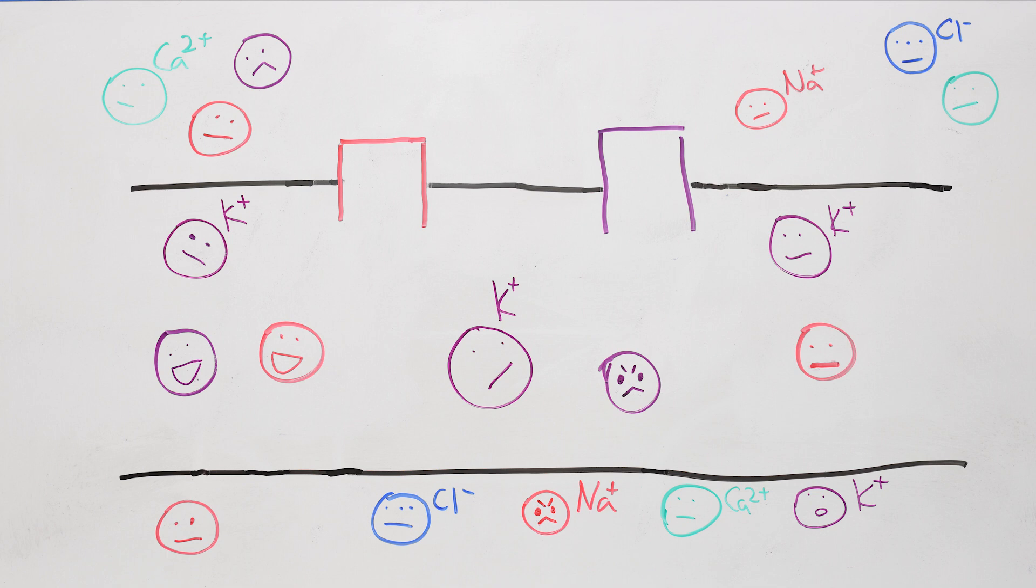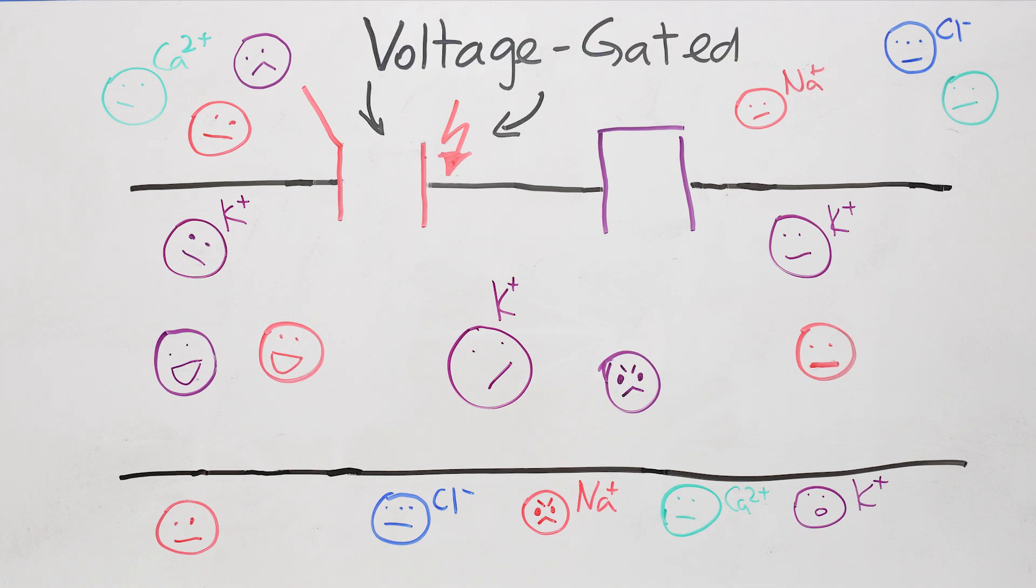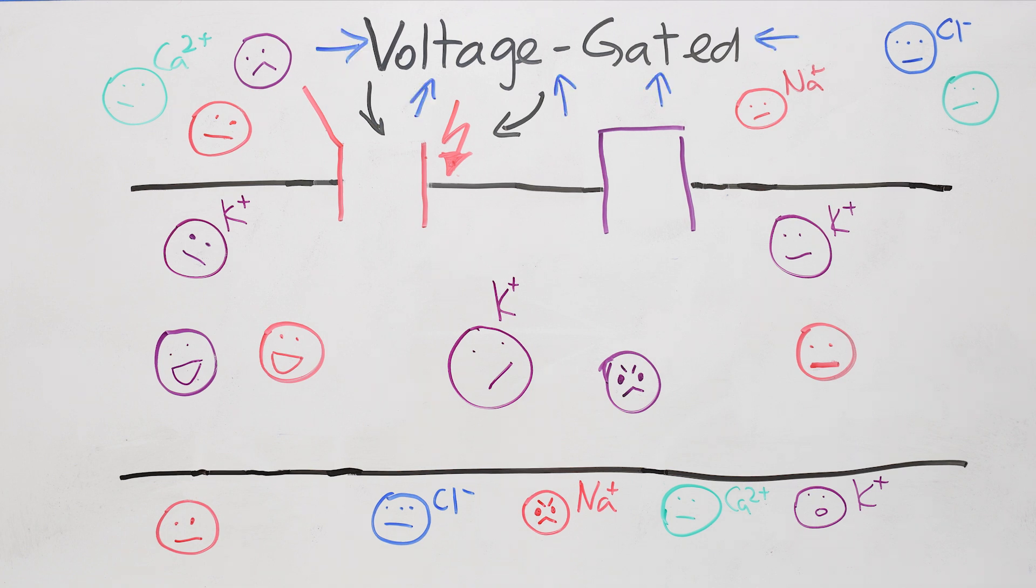And then some ion channels open when certain chemicals bind to them, like neurotransmitters. And others open when the voltage inside the cell rises. These are called voltage-gated, because they are opened by increase in voltage. And they are the ones that make the spike happen.